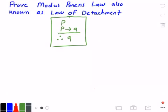I have that law in the green rectangle here, which states that if P is true and P implies Q is true, then Q is true.